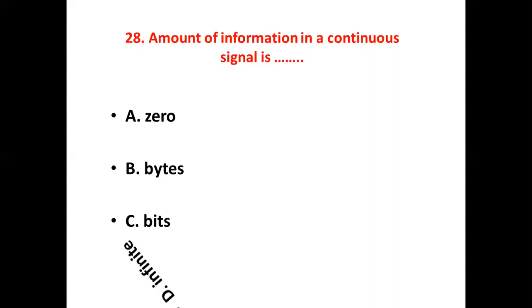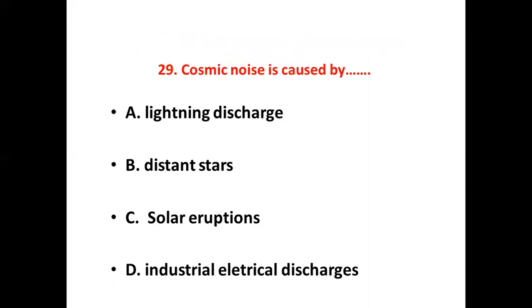Twenty-seventh bit: Redundancy in a communication system — Option A: reduces efficiency of communication. Option B: helps to detect errors. Option C: helps to correct errors. Option D: all of the above. Answer: Option D, all of the above.